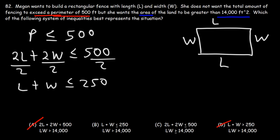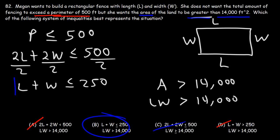So let's look at the second equation. The second situation has to do with area. She wants the area to be greater than 14,000 square feet. We know that area is length times width, so LW has to be greater than 14,000. It didn't say greater than or equal to, just greater than. So we could eliminate answer choice C because that's greater than or equal to. So B has to be the correct answer.